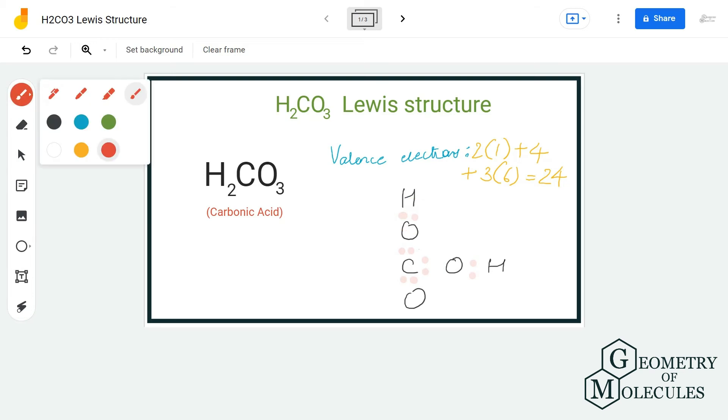For oxygens to have complete octets, let's place four electrons around these two oxygens and six electrons around this oxygen. Doing that, we will use up all 24 valence electrons.